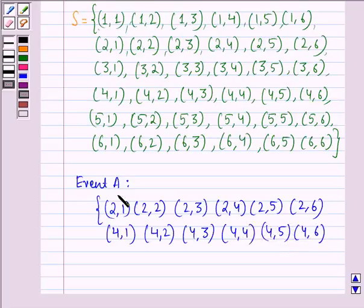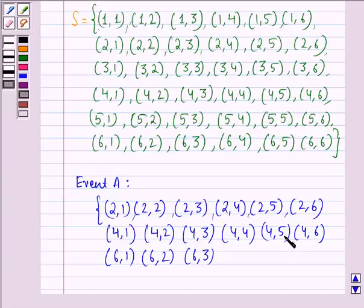Now, here we see that we should have an even number on the first die no matter what the number on the second die is, and we will have (6,1), (6,2), (6,3), (6,4), (6,5), and (6,6). So, these are the sample points and this is the sample space for event A.